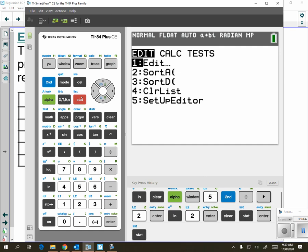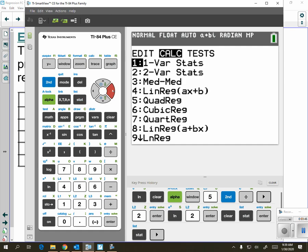Now, to actually create the regression, you're going to go back to stat, but this time we're going to go over to calculate. You need to look at all your different regressions. We have linear regression, quadratic regression, cubic, quartic.